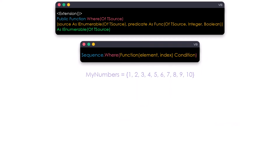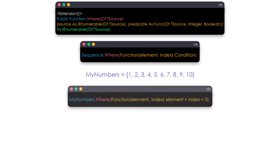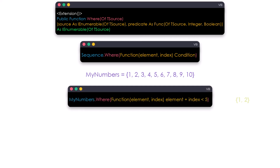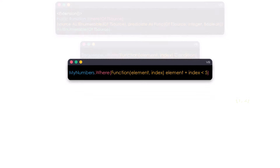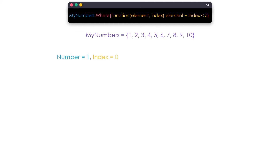Let's take the same example of the integer collection. Assume I want to get only the numbers where the number plus its index is smaller than 5. For that I can use the following query. Let's check the numbers one by one. The first number is 1 and its index is 0. 1 plus 0 equals 1, which is smaller than 5, so the condition for this number is true and therefore we get this number as output.